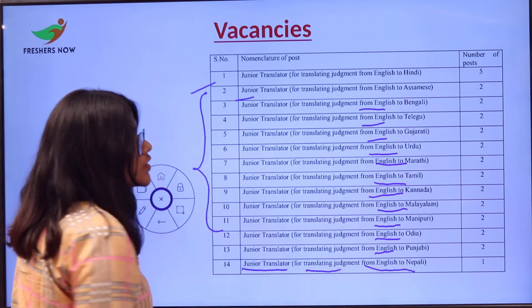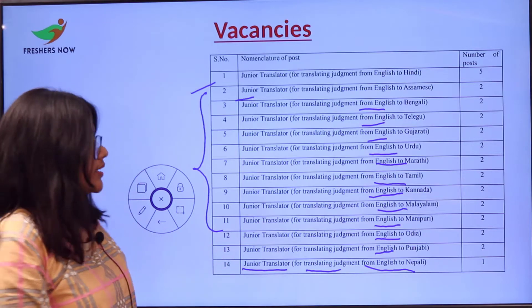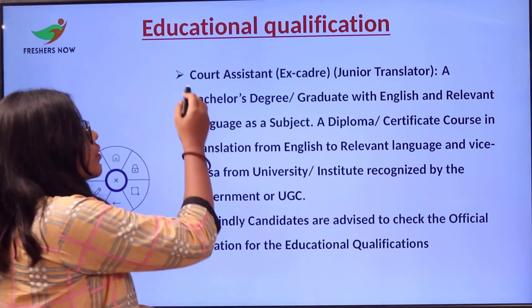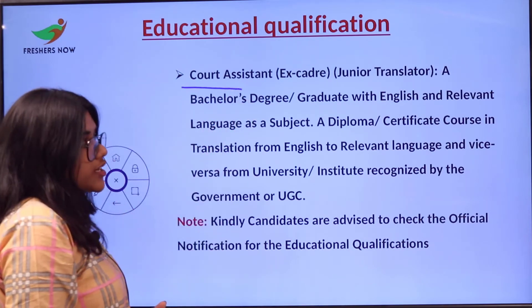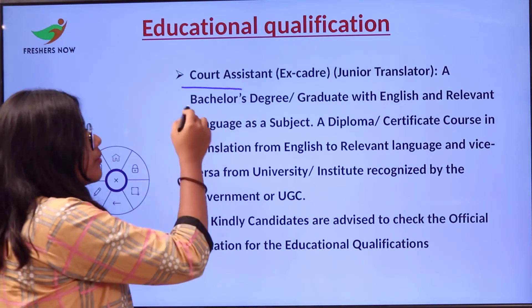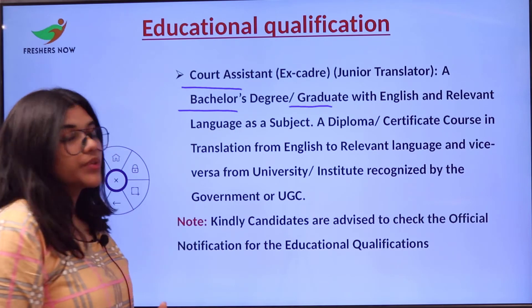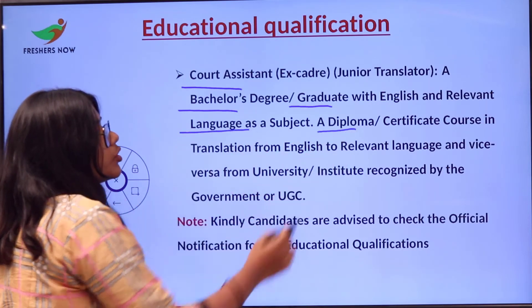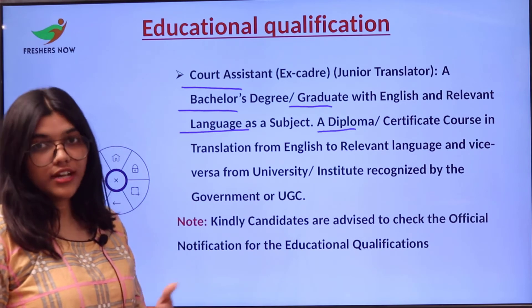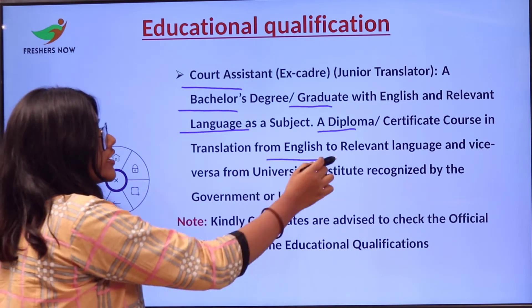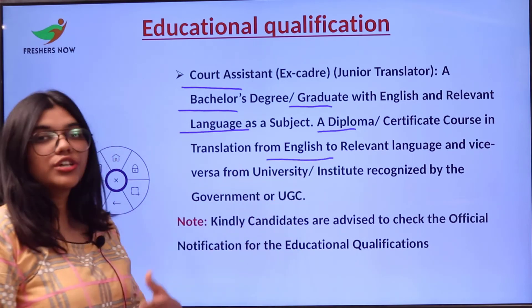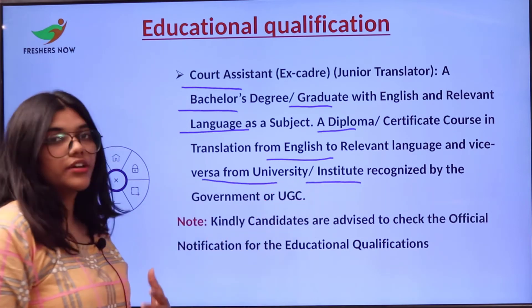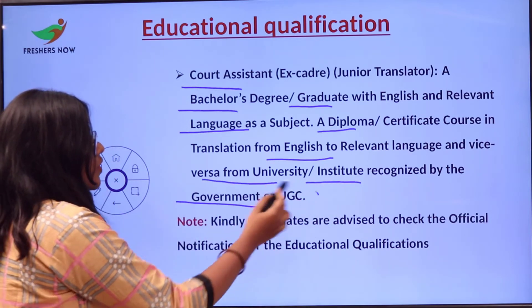For Junior Translator for translating judgments from English to Nepali, there is only one vacancy. Moving on to the education requirement for Court Assistant and Junior Translator: a bachelor's degree or graduate with English and the relevant language as a subject, along with a diploma or certificate course in translation from English to the relevant language and vice versa.